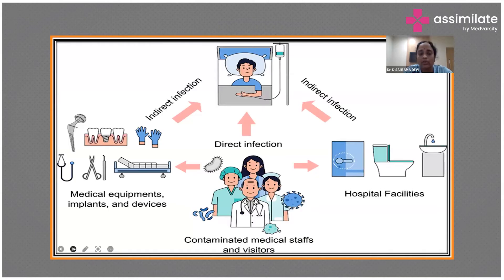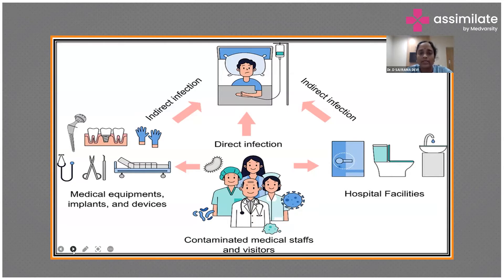How do these infections occur? As shown in the diagram, either hospital personnel — the staff — cause direct infection, or hospital equipment, medical equipment, implants, and devices cause indirect infection to the host. To stress again: these infections are not present when the patient arrives, and the patient is not incubating them — they are newly acquired from staff or from the hospital.